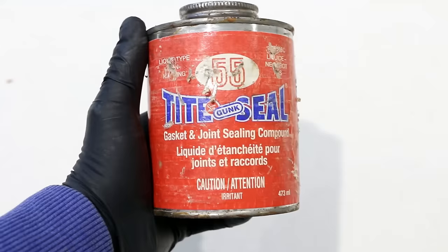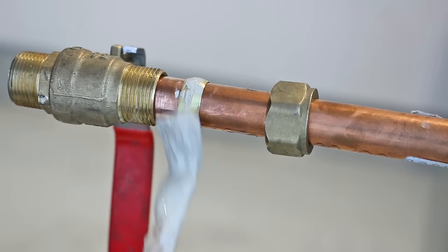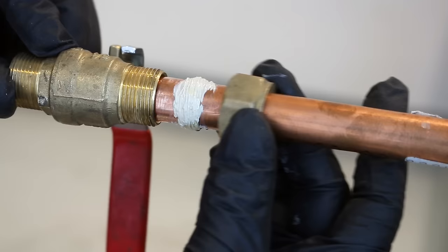So with your retainer nut and sleeve in place, now's a good time to apply the pipe dope. Only a small amount is required for it to do its job. The only thing left to do is to tighten the retainer nut.